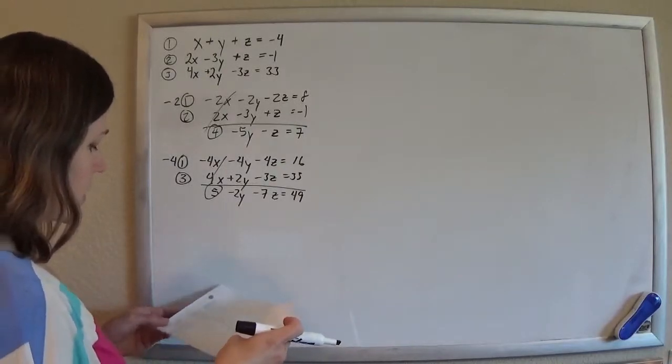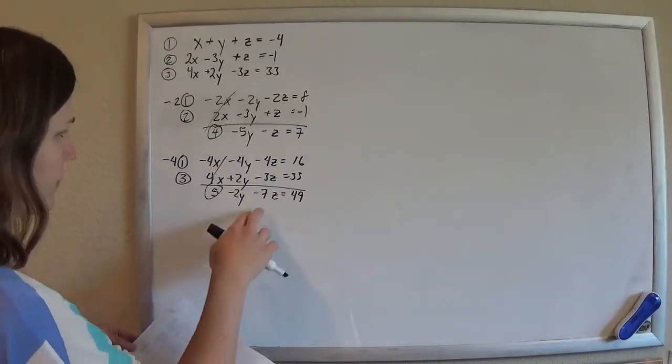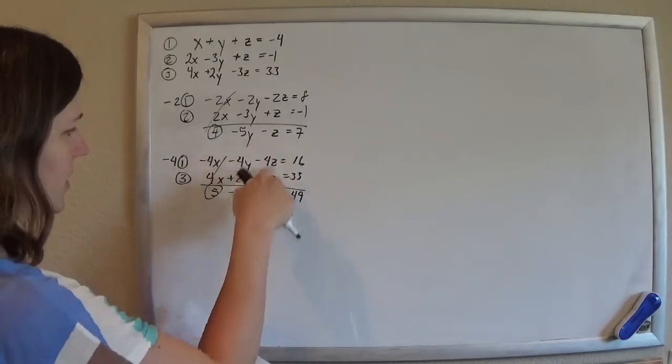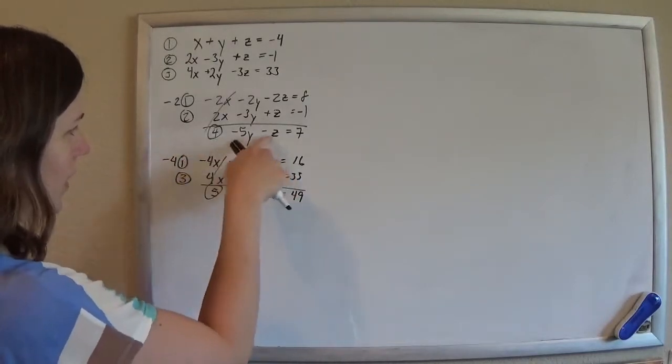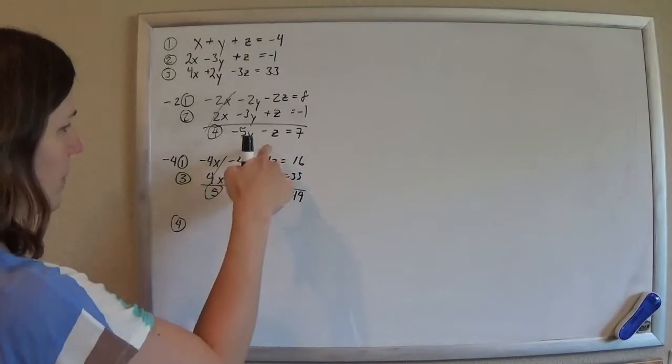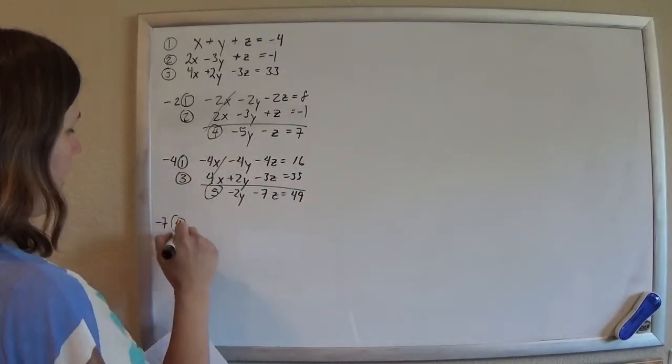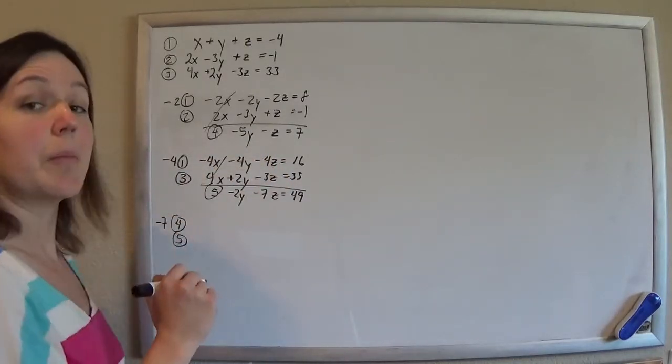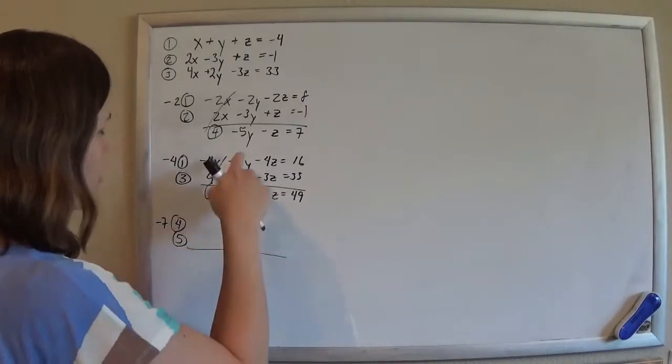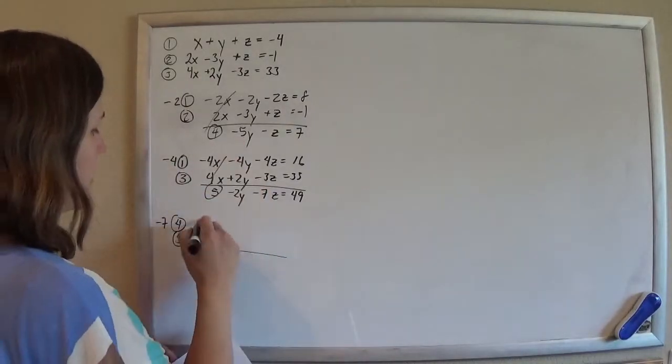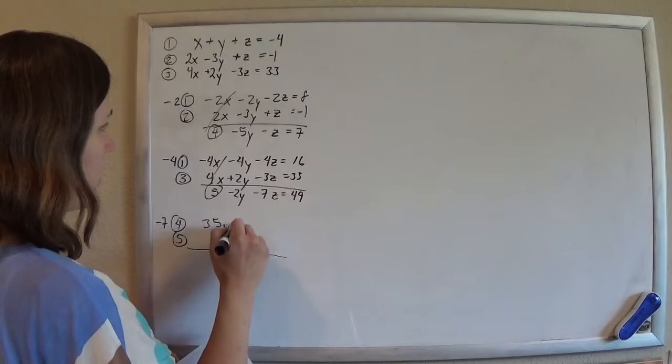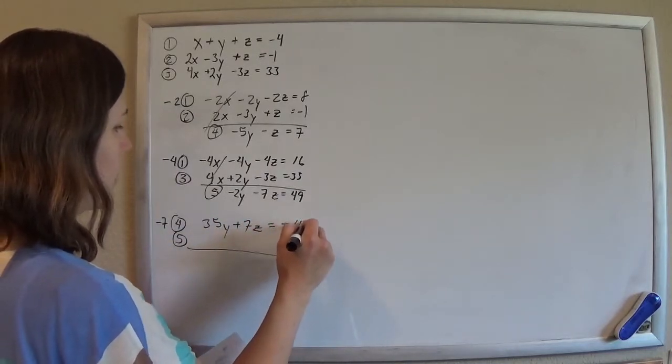So what I'm going to do is I'll get rid of these z's here. So I'll multiply equation 4 by a negative 7. And then I'll be able to add it to 5 and the z's will go. So negative 7 times this one is 35y plus 7z equals minus 49.